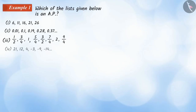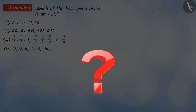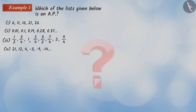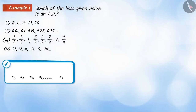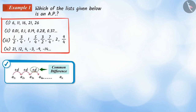Which of the lists given below is an AP? We learnt in the previous video that in an AP, except for the first term, each term is found by adding a certain number — the common difference D — to its previous term. Therefore, the list in which any two consecutive terms have the same difference will be an AP.